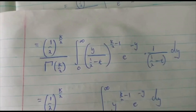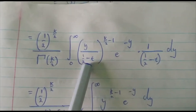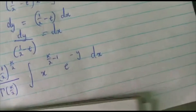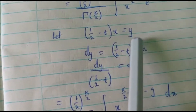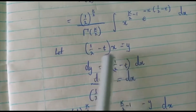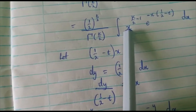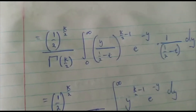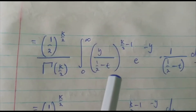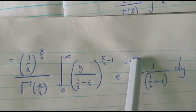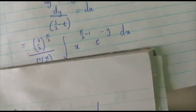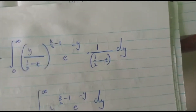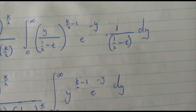Our formula is: half minus t times x equals y, so we make x the subject and substitute x here. It becomes our new expression for x, with e to the power negative y since we have substituted the whole power with y. Our dx is substituted with one over (half minus t) times dy.